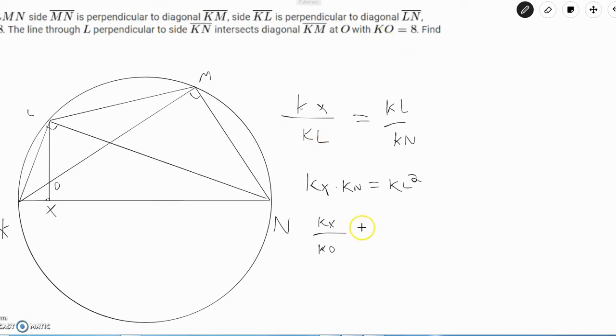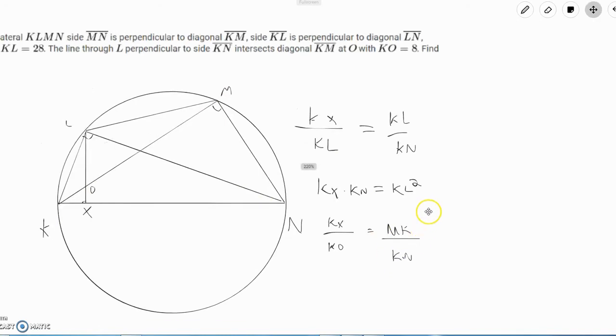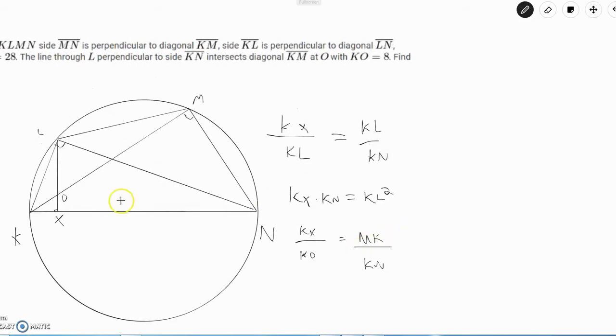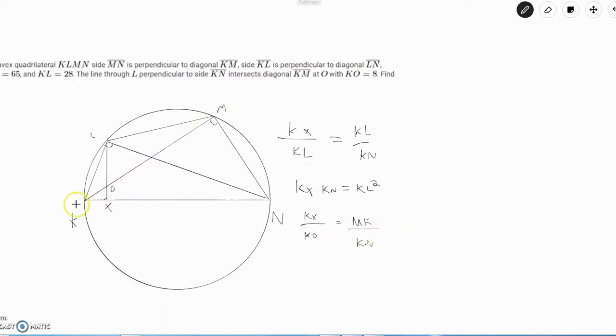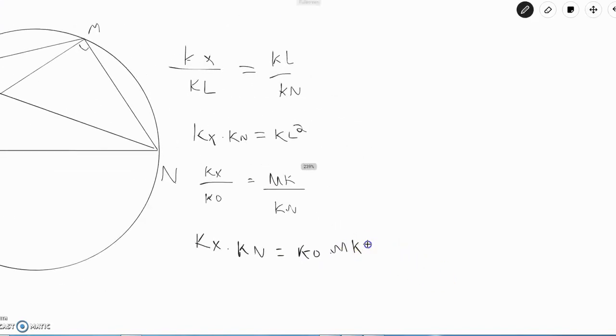This is equal to the long side of this triangle, MK, over KN. This is also motivated because we want to find MO and MK is equal to MO plus OK. Rearranging this equation, we see that KX times KN is equal to KO times MK. What we see here now is that these two are exactly the same expression, so that means KL squared is equal to KX times KN is equal to KO times MK.